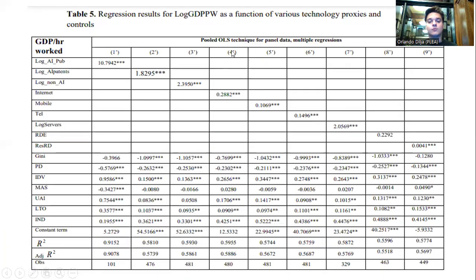For the pooled OLS with multiple regressions, we added the Gini income inequality and Hofstede's six cultural variables, which are power distance, individualism, masculinity versus femininity, uncertainty avoidance, long-term orientation, and indulgence. So we still see statistically significant coefficients for every variable aside from R&D expenditures, and we also see that they are positive.